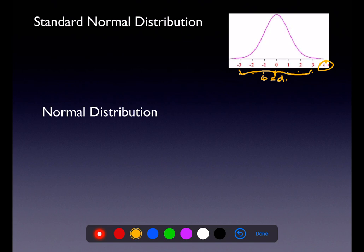Data values can be more than three deviations above or below, but as we talked about with the empirical rule, 99.7% of our data values are within three standard deviations of the mean.